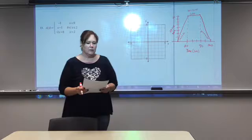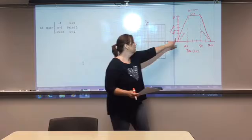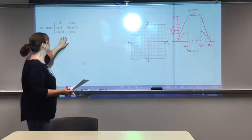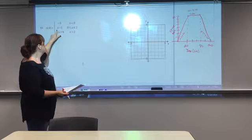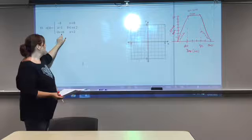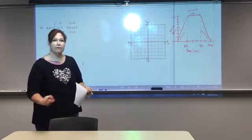I want to do one more with you since there are actually three parts to the graph, similar to this one: linear, constant, linear. So let's look at z of x. It equals negative one when x is less than zero, x minus one when x is between zero and two (inclusive), and negative two x plus six when x is greater than two. We're going to find points for each one and then graph it.